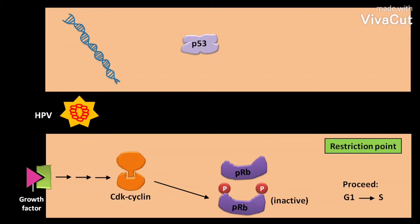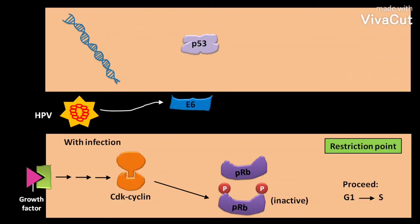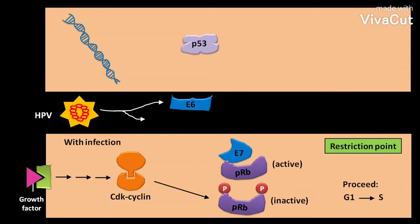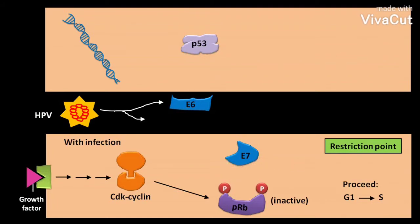But when the infection occurs, the HPV produces two proteins, E6 and E7, in the host cell. The E7 binds to the active PRB, or unphosphorylated PRB. This binding causes the PRB to be degraded.